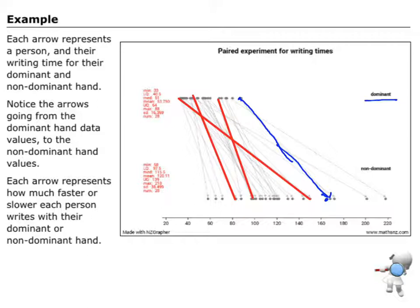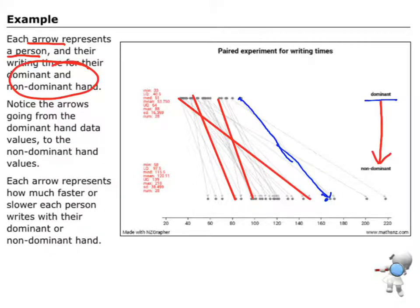Each arrow represents a person and their writing time with both their dominant and non-dominant hand. Notice that the arrows are going from the dominant to the non-dominant, so the arrow itself is looking at how much faster or slower each person writes. For example, the blue arrow — their writing time with their dominant hand is maybe 100 seconds, and that goes down to their non-dominant hand time of maybe 170 seconds. So the arrow represents that that student took an extra 70 seconds to write that passage with their non-dominant hand compared with their dominant hand.